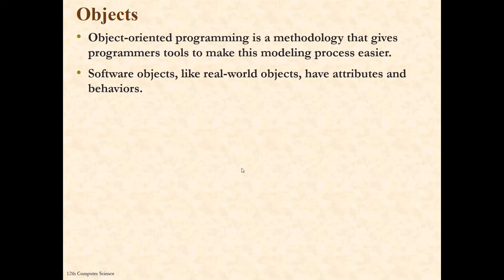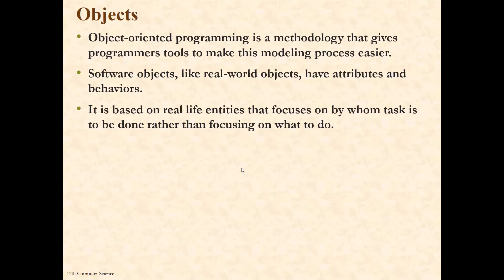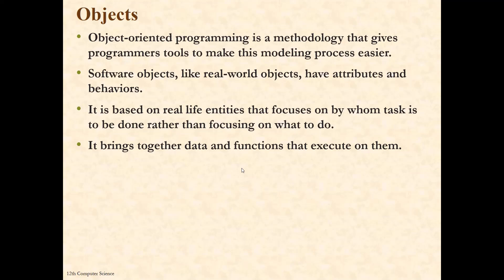We as human beings have attributes like two legs, two arms, two eyes, one nose — these are our attributes. And we have behaviors like we can think, we can walk, we can talk — these are our behaviors. Similarly, every software object also has attributes and behavior. It is based on real-life entities that focus on by whom a task is to be done rather than what to do. It is not important what to do; it is important for whom the task is to be done. So object brings together the data and functions that execute on them.